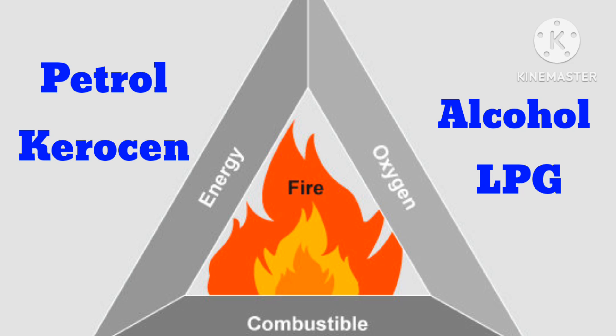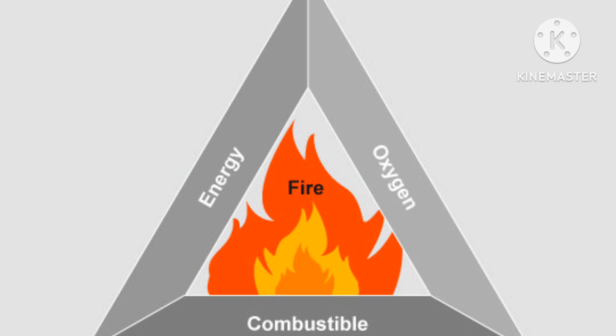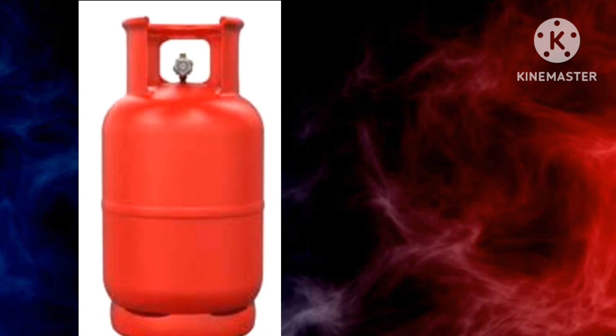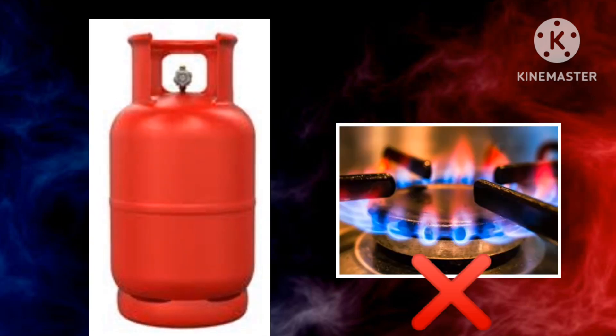Substances like petrol, kerosene, alcohol, and LPG have low ignition temperatures and can easily catch fire. They are called inflammable substances. Kerosene can catch fire even if heated slightly, so it needs to be stored carefully. No open flame should be allowed near an LPG cylinder in the kitchen.